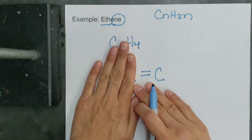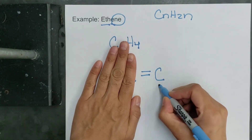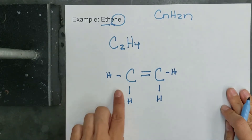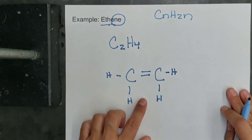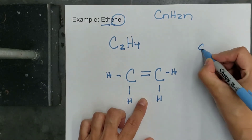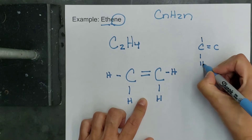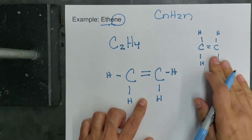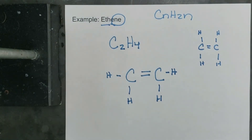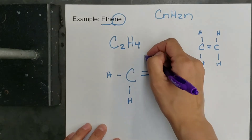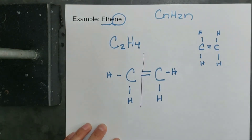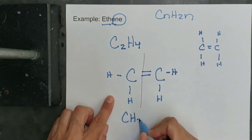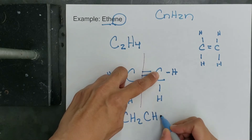Each carbon in ethene already has two bonds from the double bond, so each carbon needs two more hydrogens added. The condensed formula shows CH₂=CH₂, with two hydrogens on each carbon.